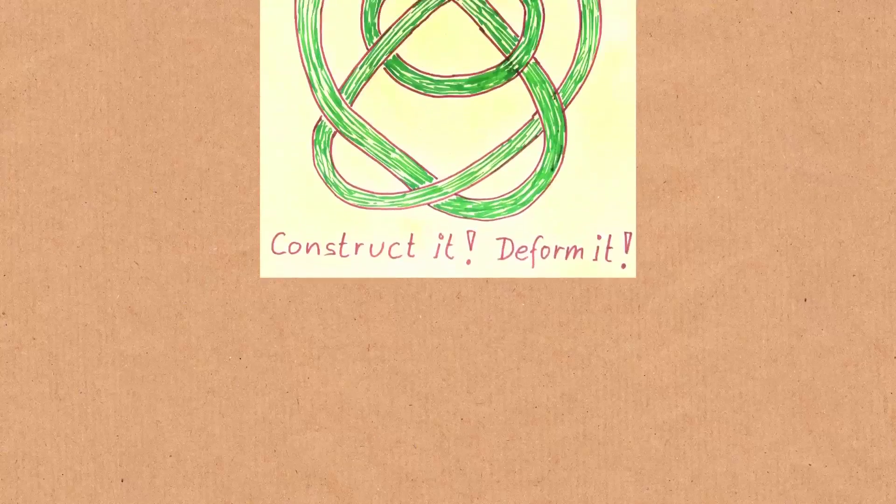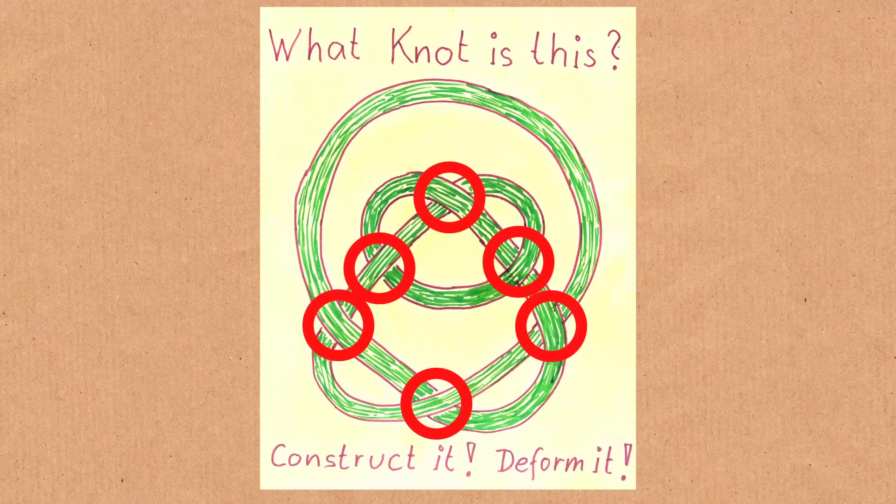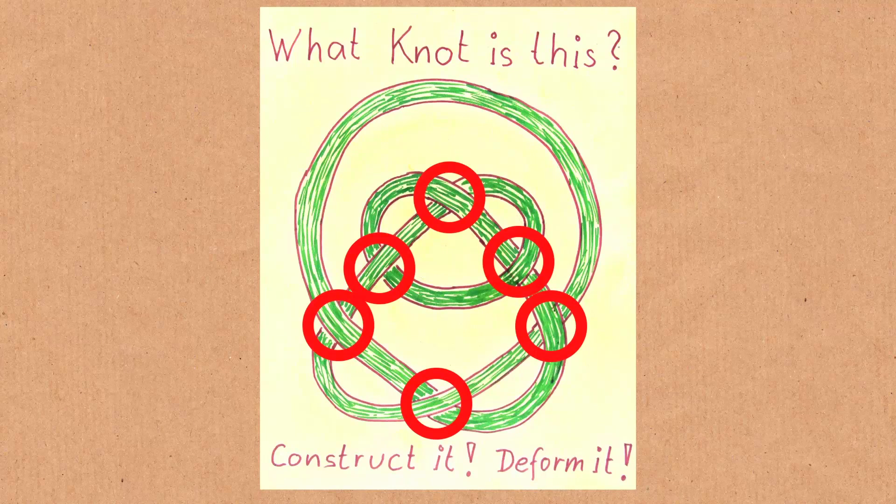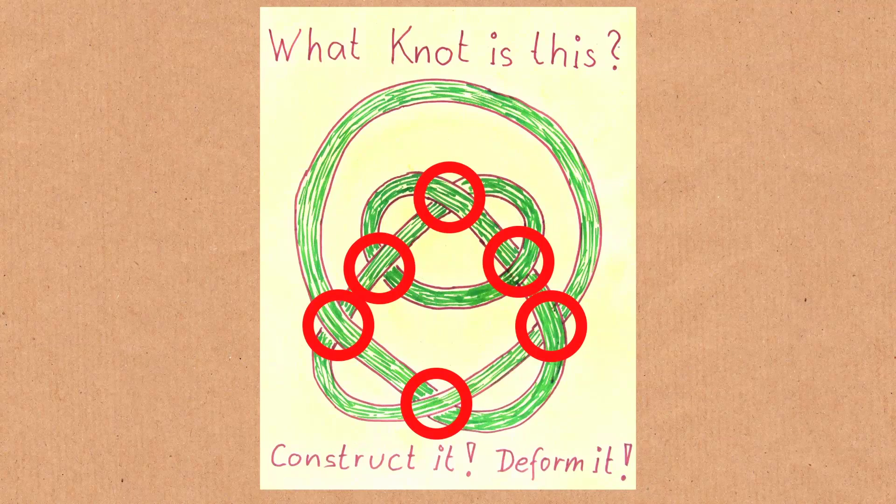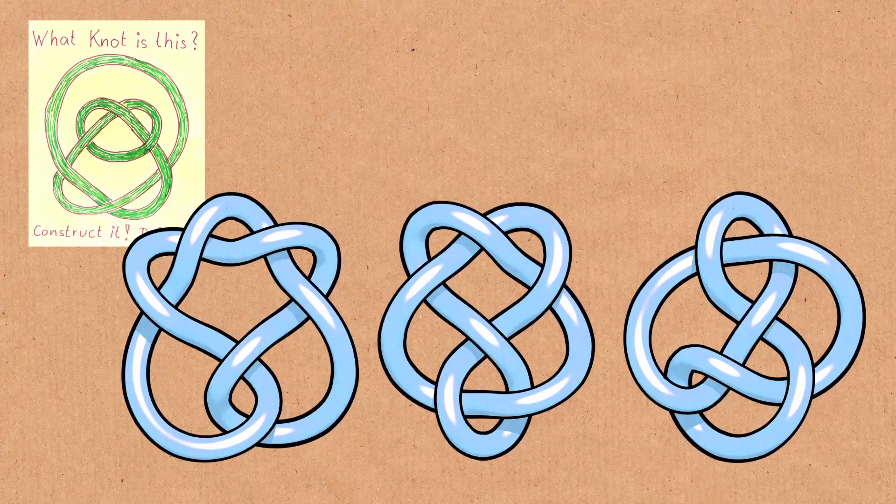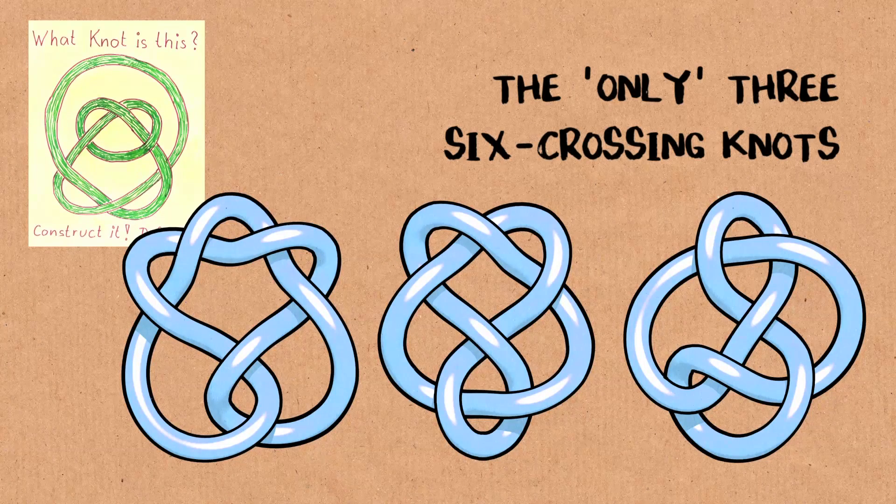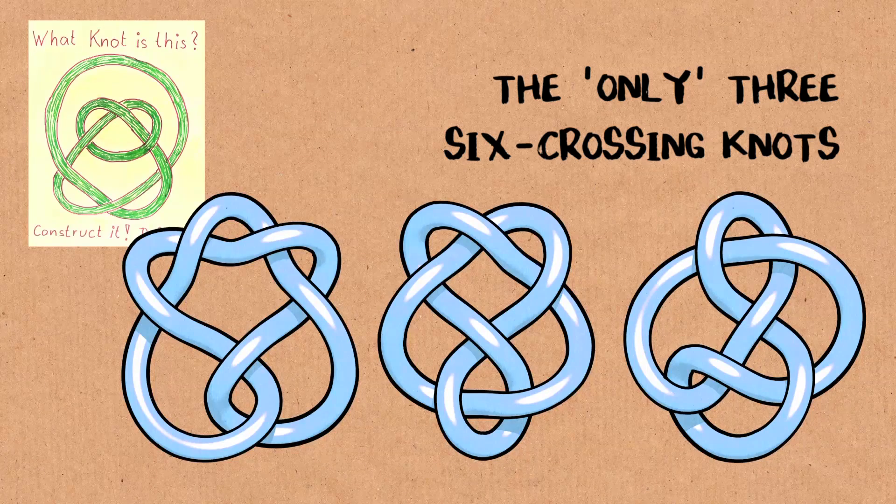Now more difficult homework. Here is yet another knot. One, two, three, four, five, six. Six crossings, no problem. I mean I can try to mentally flip these loops around or so and nothing comes of it. So I'm probably stuck. Now I go back to the knot table that we had before. Can we figure out this six crossing knot, which one of those three it is?